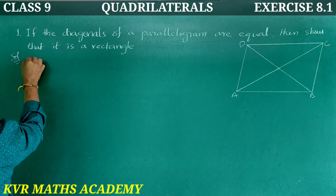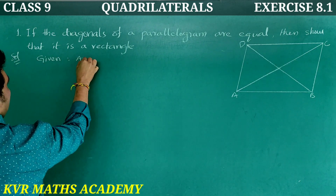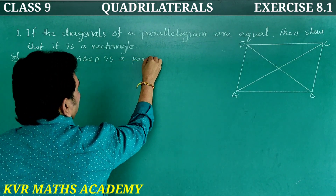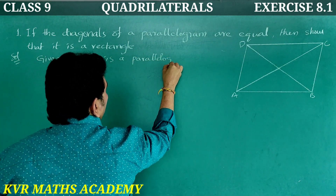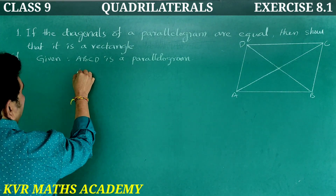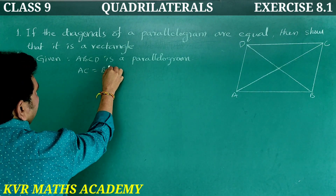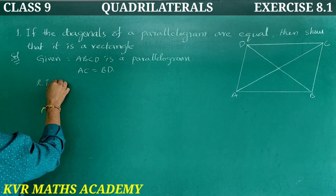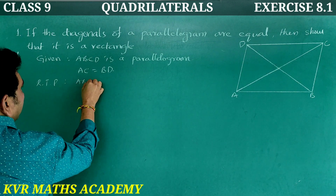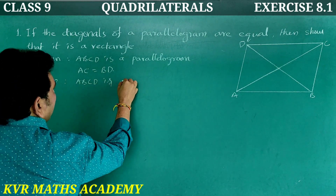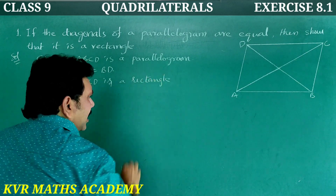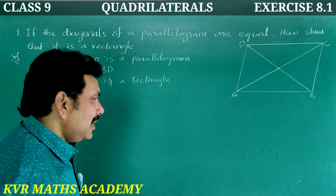Solution. Given: ABCD is a parallelogram in which diagonal AC is equal to BD. Required to prove: ABCD is a rectangle.